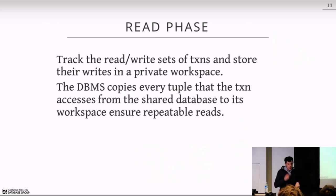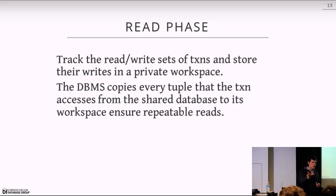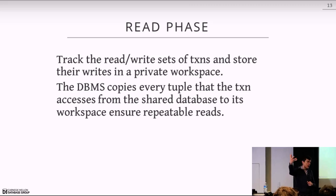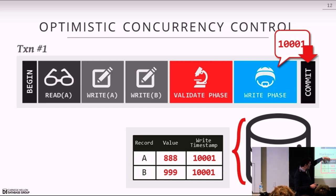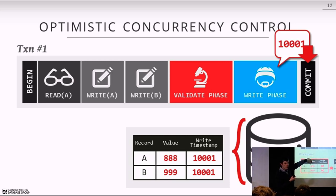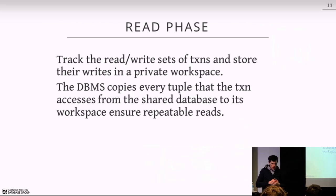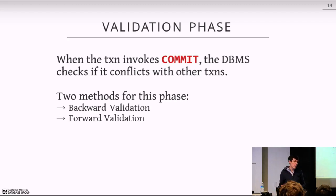In the read phase, we track the read-write sets of every transaction and store all modifications in our private workspace. We also copy tuples from the global database into our private workspace to ensure repeatable reads — so if we read object A and read it again later in the transaction, even if someone else modifies it, we still get our original version. In the validation phase, when the transaction invokes commit, the database checks for conflicts using either backward validation or forward validation.